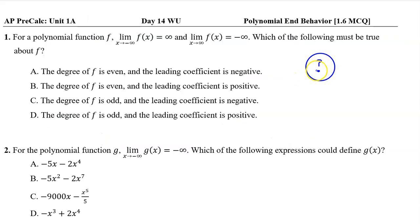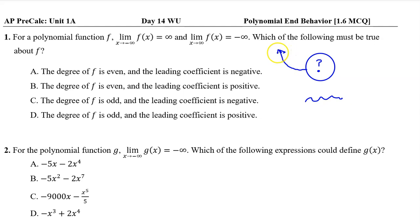I'm going to sketch an end behavior model now. I'm putting a little question mark in the middle because we don't know exactly how many twists and turns are happening in the middle. But we do know that the limit as x approaches negative infinity is positive infinity — in other words, the polynomial is approaching positive infinity on the left. And the limit as x approaches positive infinity is equal to negative infinity — in other words, the polynomial is approaching negative infinity on the right.